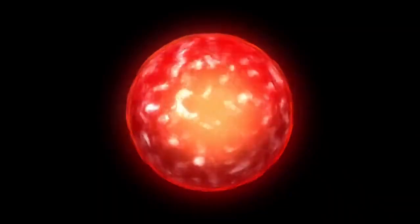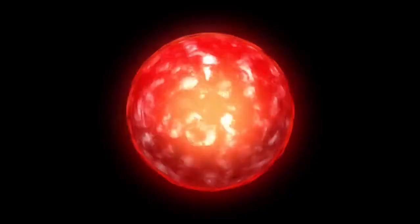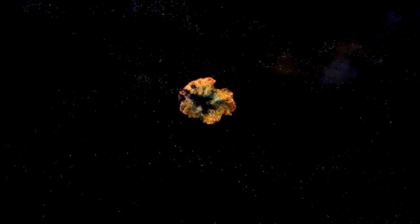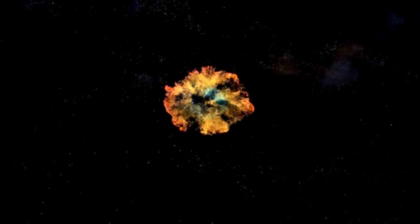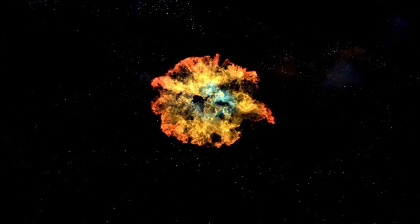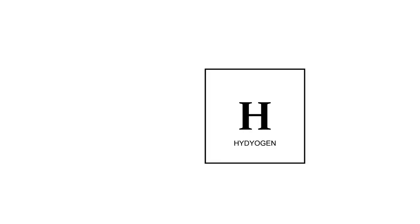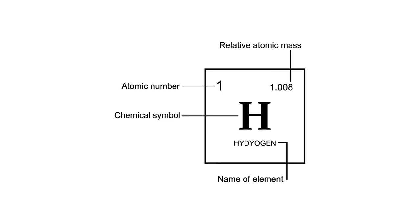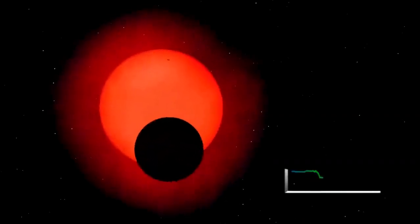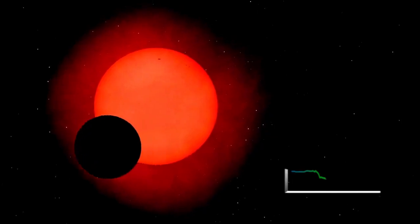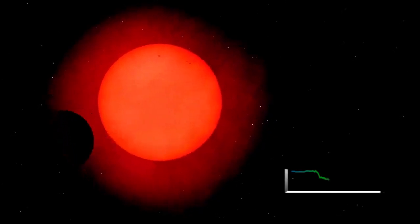In the case of Betelgeuse, a red supergiant nearing the end of its life cycle, this balance has become increasingly unstable. As the star depletes its core hydrogen fuel, the nuclear fusion processes that sustain it undergo significant changes. When hydrogen fusion slows in the core, radiation pressure decreases, causing the gravitational pull to momentarily gain the upper hand. This results in the contraction of the star's outer layers.